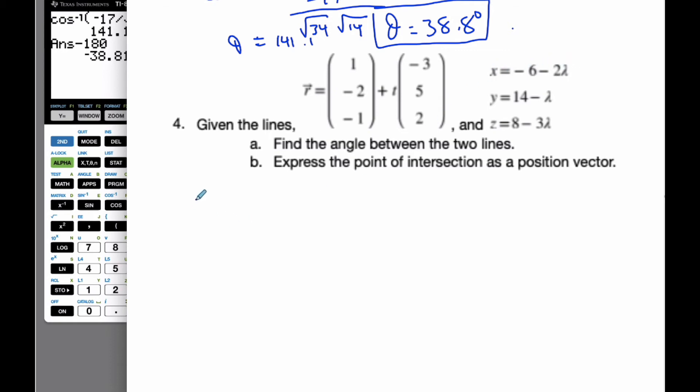So I can say that 1 minus 3t is equal to negative 6 minus 2 lambda. So the x's are the same. If I rearrange this, I get 2 lambda minus 3t is equal to negative 7.